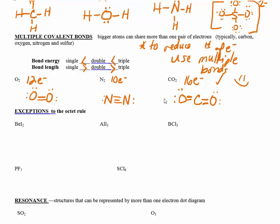Now let's look at exceptions to the octet rule. Beryllium iodide — these exceptions occur with larger halogens. Beryllium only has two valence electrons. The math: fourteen from the two iodines plus two from beryllium gives sixteen electrons total. Each iodine gets its eight: two, four, six, eight on each side. Counting all electrons: two, four, six, eight, ten, twelve, fourteen, sixteen — all sixteen are used, so beryllium ends up with no lone pairs. Beryllium does not get a lone pair; it is an exception.